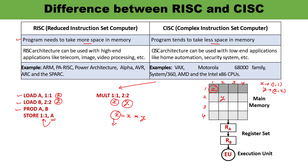One more important point is about pipelining — pipelining is a concept introduced in RISC. RISC architectures can be used with high-end applications like telecommunications, image processing, video processing, and speech processing. CISC architecture can be used with low-end applications like security systems and home automation. This is how you can differentiate RISC and CISC based on various parameters. Thank you for watching.